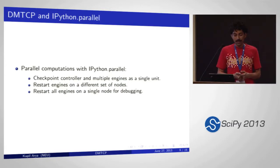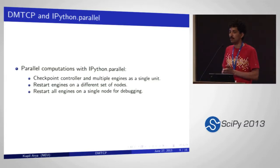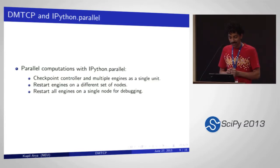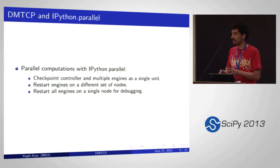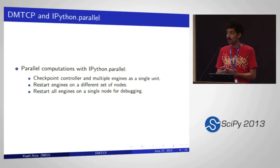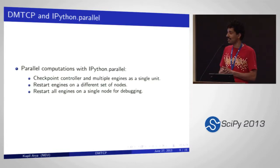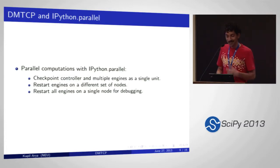DMTCP can checkpoint distributed computations connected via sockets over a network. IPython.parallel is quite popular — you have a single controller and multiple engines. When DMTCP checkpoints it, it checkpoints as a single unit, so you don't have to worry about data in transit, data loss, or synchronization issues. Once checkpointed, you can migrate it to a new cluster, restart on new nodes, or restart on your laptop and do all the debugging you want.